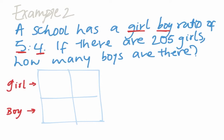So you're going to write the ratio. So girl is five, boy is four, right below. That's the first information.